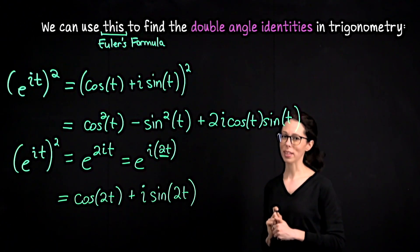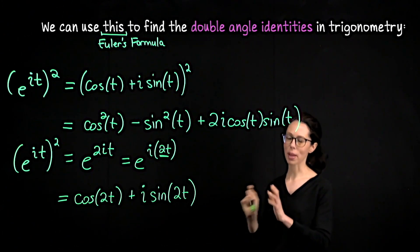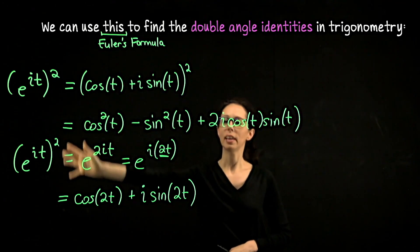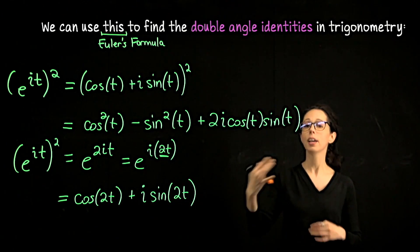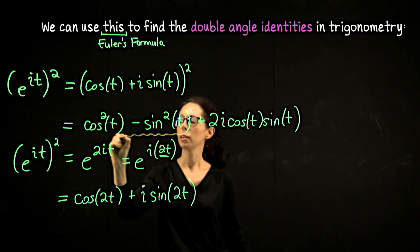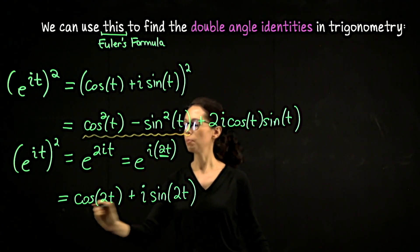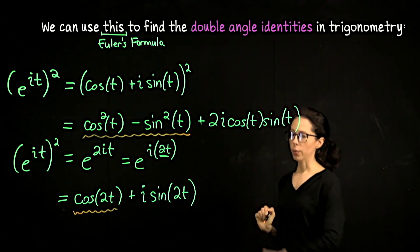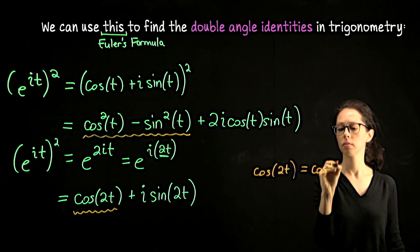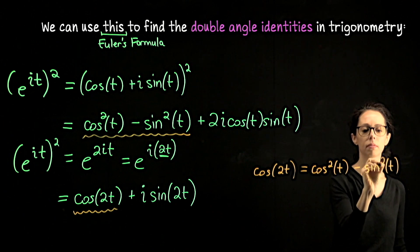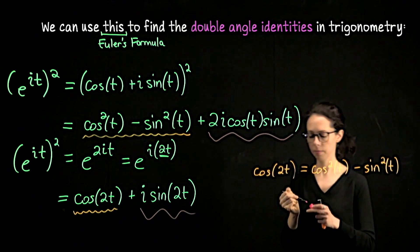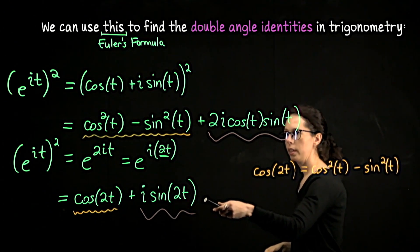I've squared e to the it two different ways. Since they must be equal, matching real components with real components and imaginary with imaginary gives us: cosine of 2t equals cosine squared of t minus sine squared of t, and sine of 2t equals 2 cosine of t sine of t.